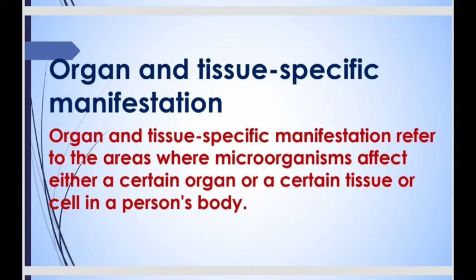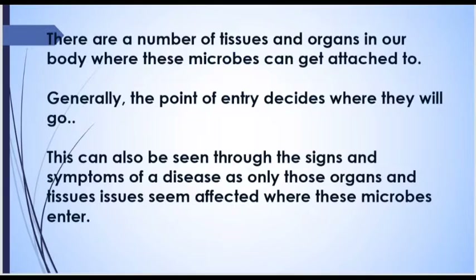Organ and tissue-specific manifestation refers to the areas where microorganisms affect either a certain organ, a certain tissue, or a cell in a person's body. There are a number of tissues and organs in our body where these microbes can get attached to. Generally, the point of entry decides where they will go. This can also be seen through the signs and symptoms of a disease, as only those organs and tissues seem affected where these microbes enter.